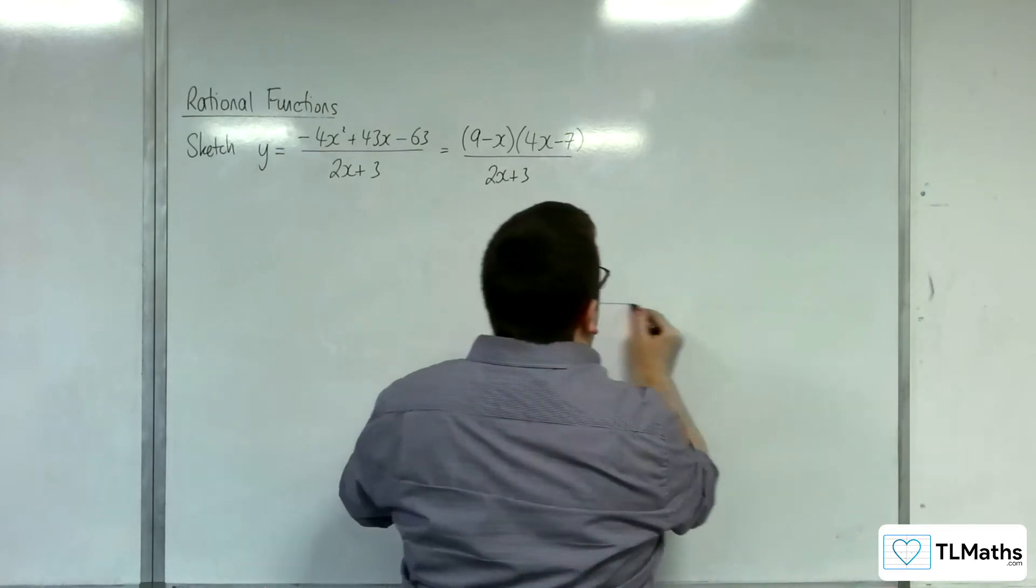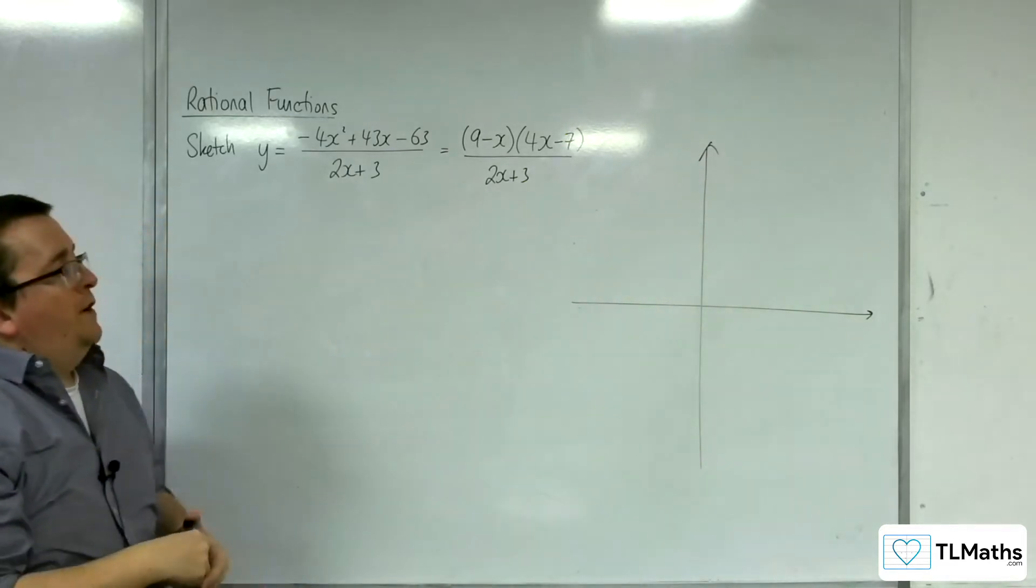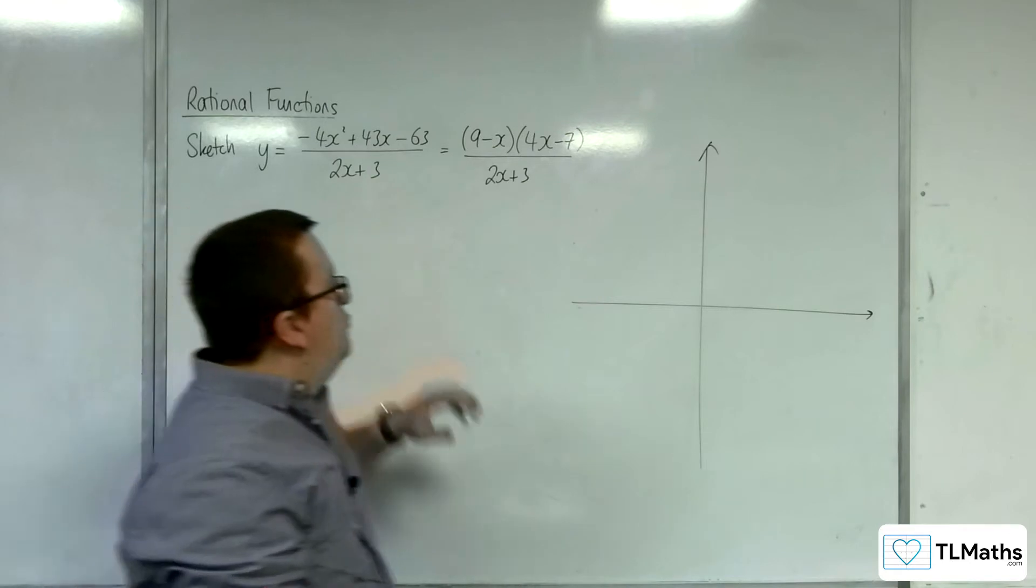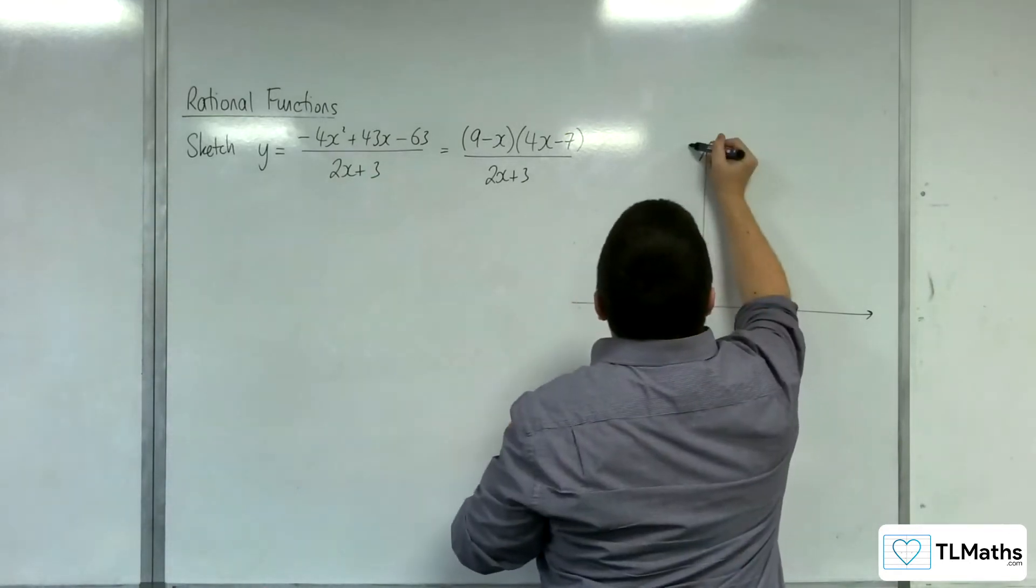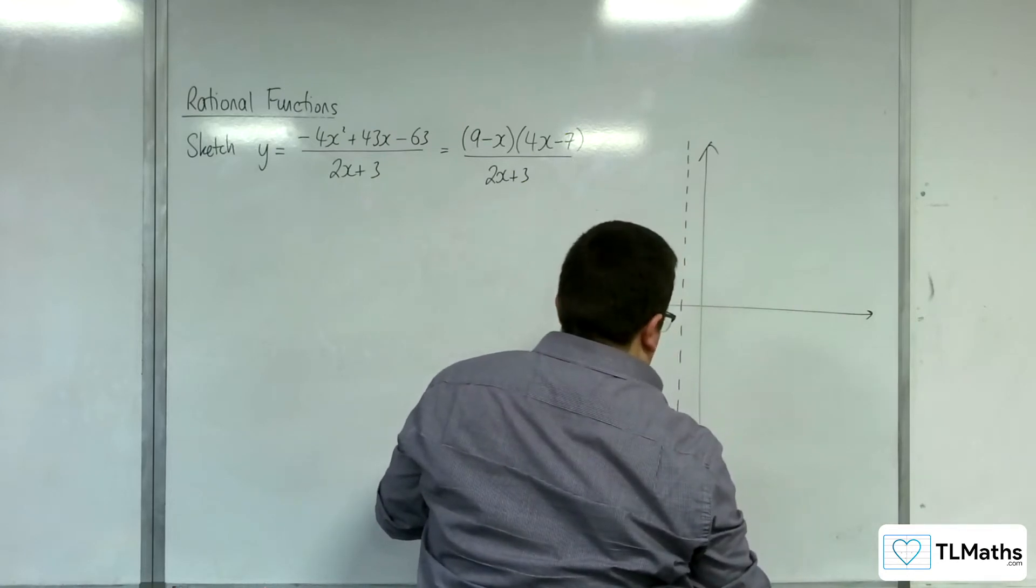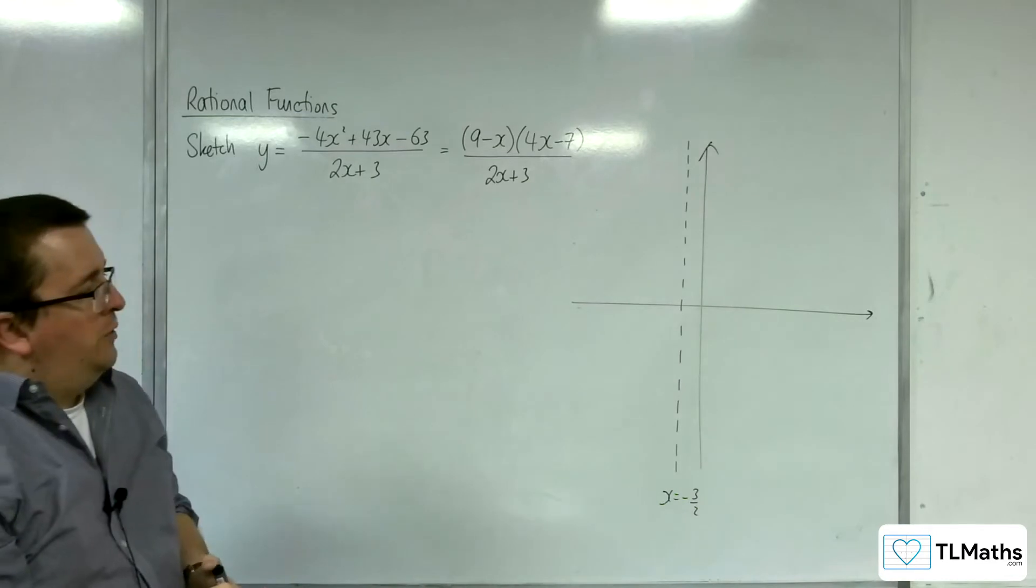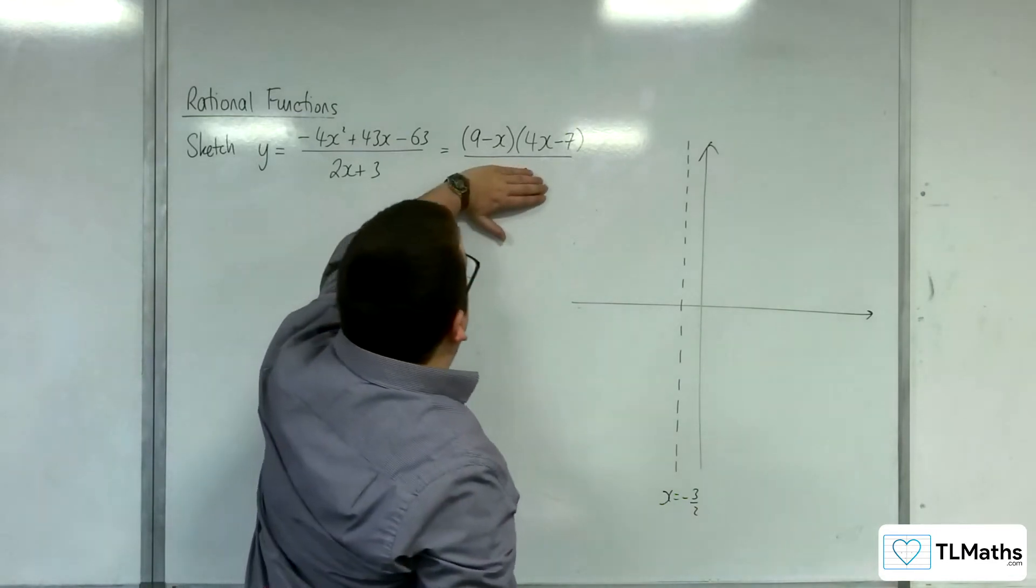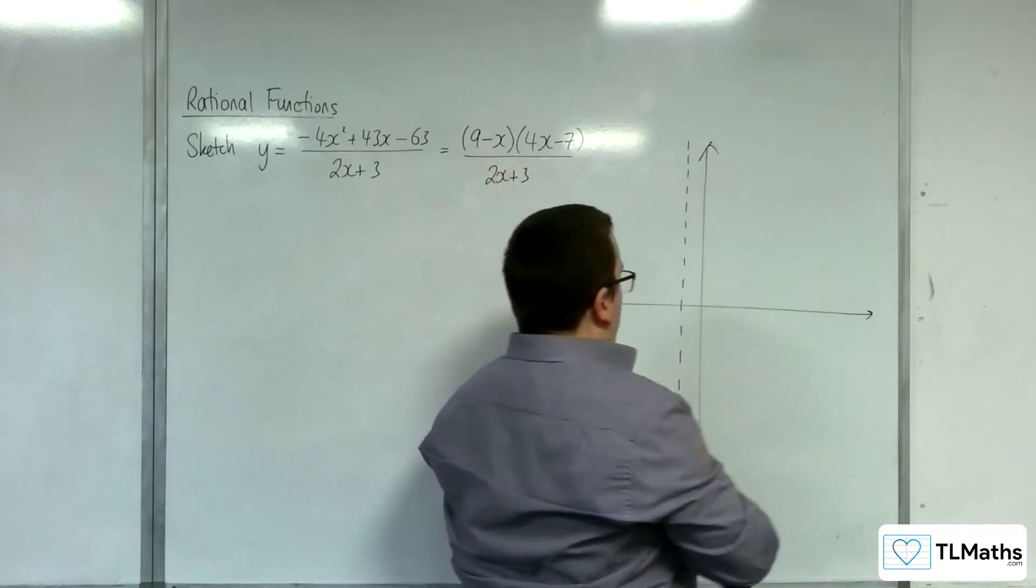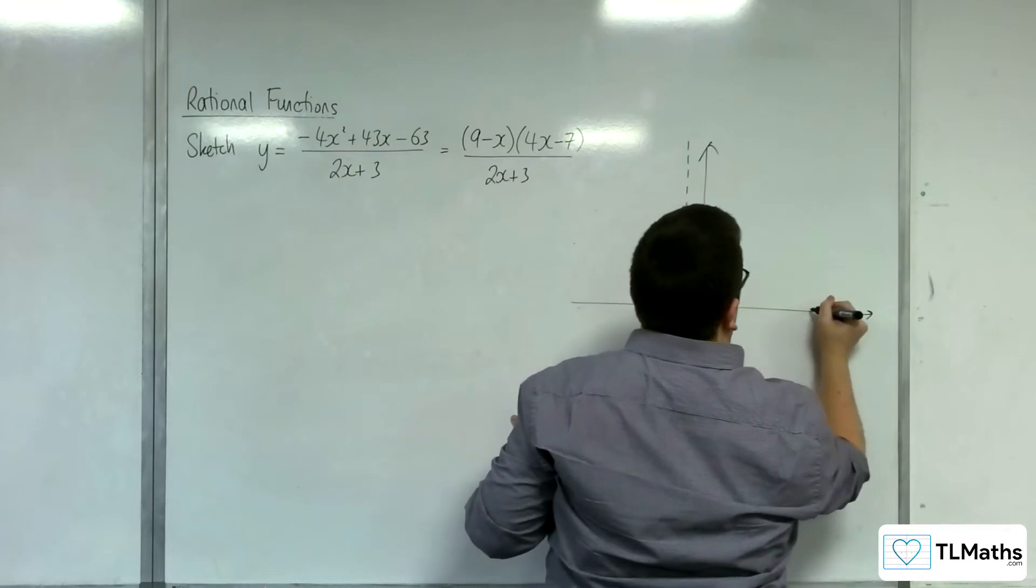OK, and some axes. Right, vertical asymptotes. That's when the denominator is 0, so minus 3 halves. Right, where does it cross the x-axis? That's when the numerator is 0. So that will be at 9 and 7 quarters.